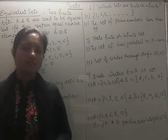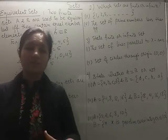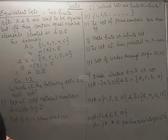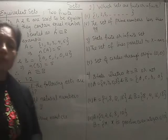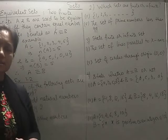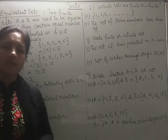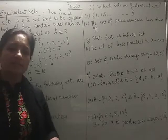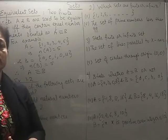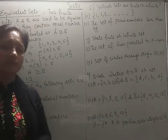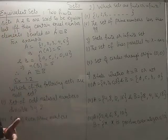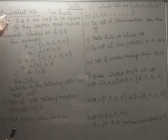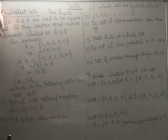Well students, in the previous session you people learnt the various types of sets. We even discussed equality of the sets. According to equality of the sets, they can be termed equal in case they have equal number of elements and those elements have to be exactly the same. Now this is a special case.